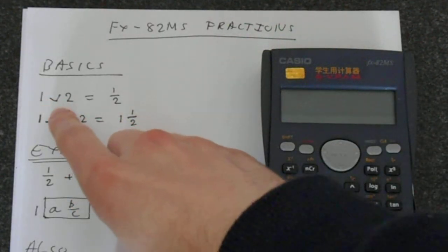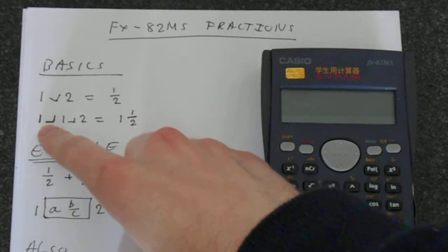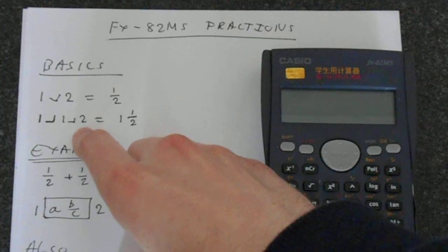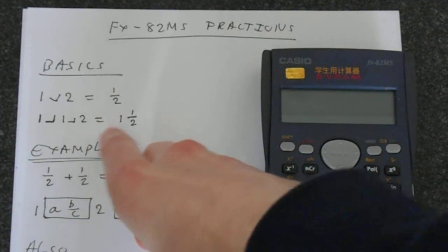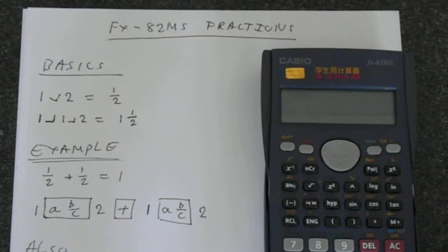If you've got 1 followed by this symbol 2, that's equivalent to a half, and 1, the symbol 1, and then 2, is 1 and a half. So if you get this notation into your head, you're well on your way to understanding.